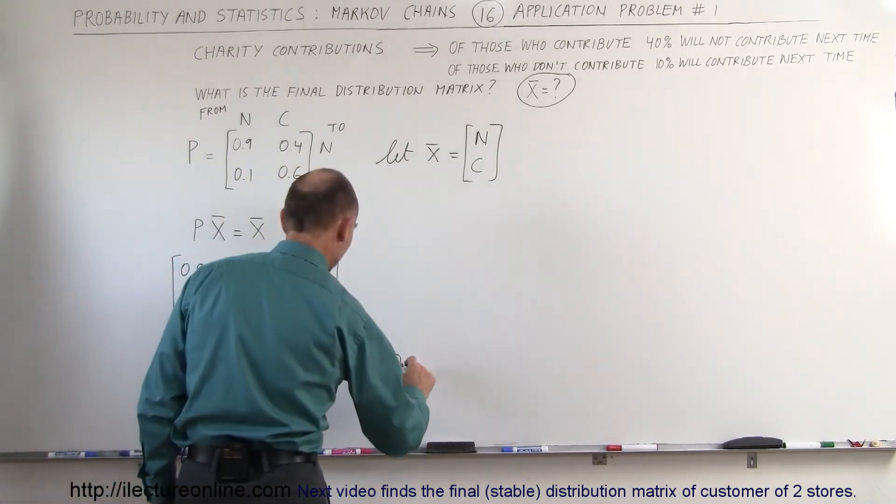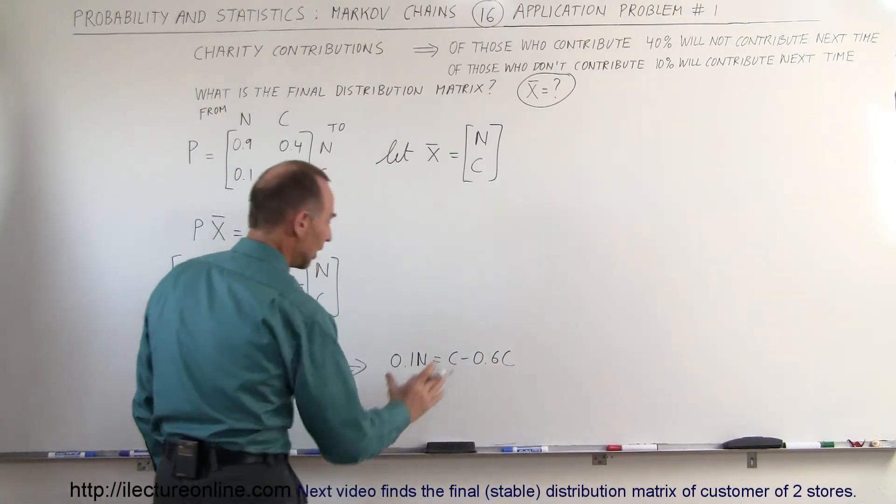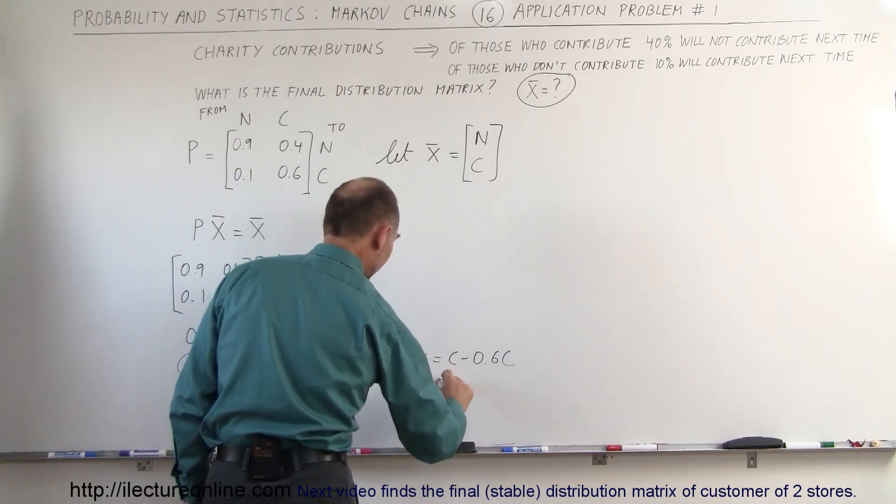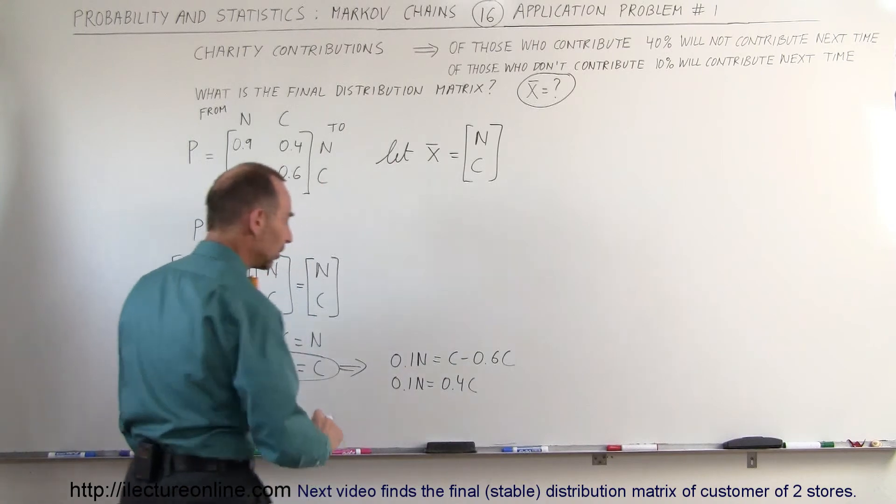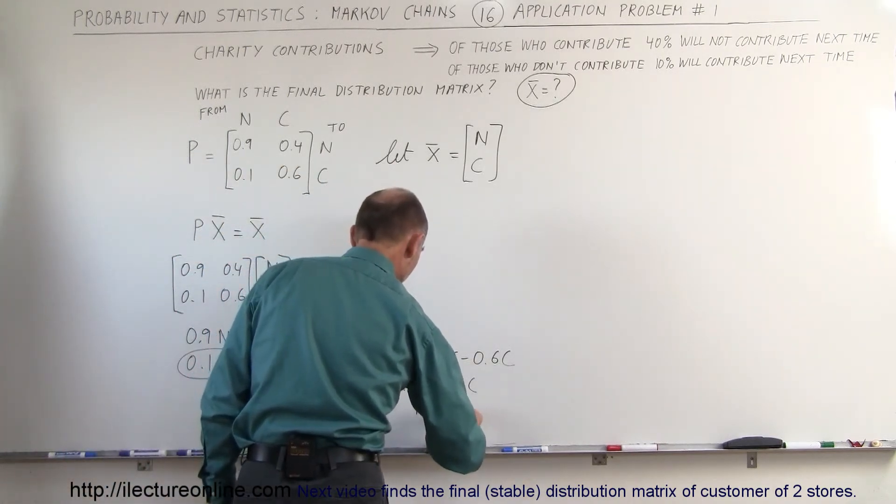So this becomes 0.1N equals C minus 0.6C. Combining the right side, we get 0.1N equals 0.4C, and multiplying both sides by 10, we get N equals 4C.